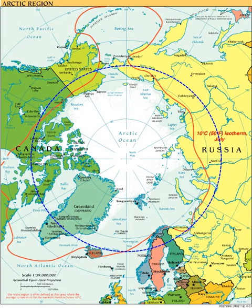The North American Arctic comprises the northern portions of Alaska USA, northern Canada and Greenland. Major bodies of water include the Arctic Ocean, Hudson Bay, the Gulf of Alaska and North Atlantic Ocean.